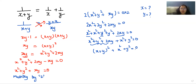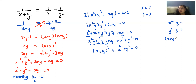This becomes (x+y)² + x² + y² = 0. Now, x² is always ≥ 0, y² is always ≥ 0, and (x+y)² is always ≥ 0, so none of these can be negative. Therefore each term must individually equal 0: (x+y)² = 0, x² = 0, and y² = 0.